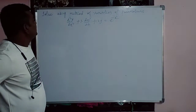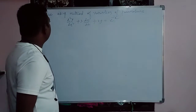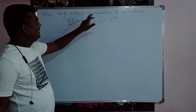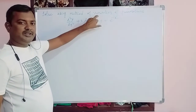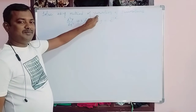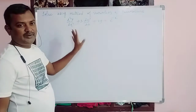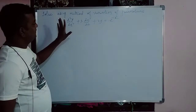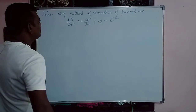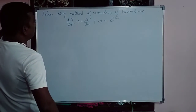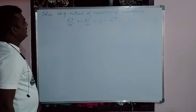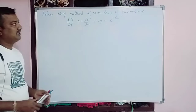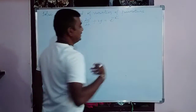Welcome back students. In this class we will discuss an example based on the variation of parameters. The problem is: d²y/dx² + 3dy/dx + 2y = e^(-x), to be solved using the method of variation of parameters.